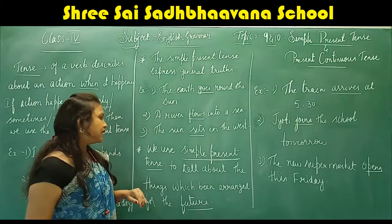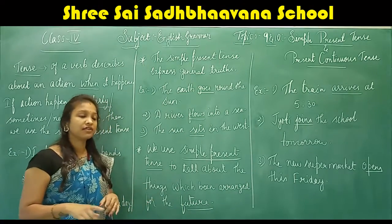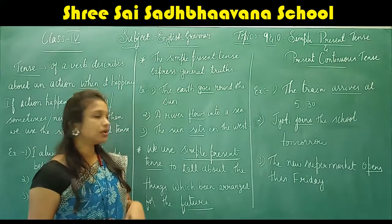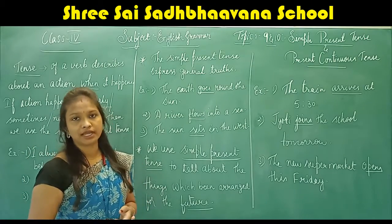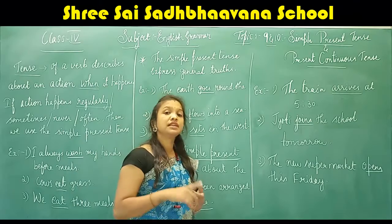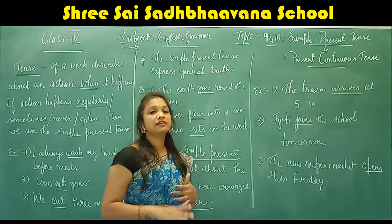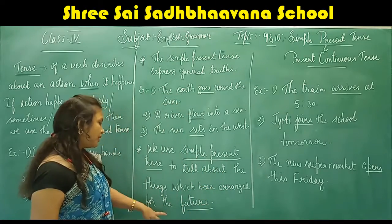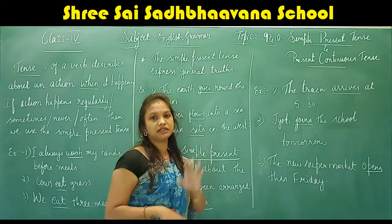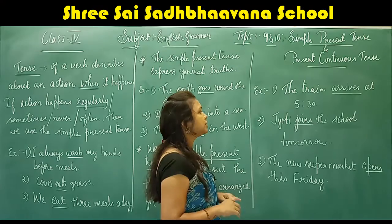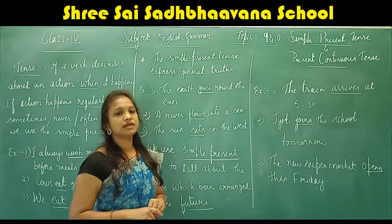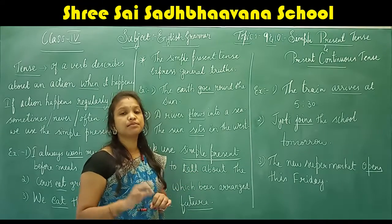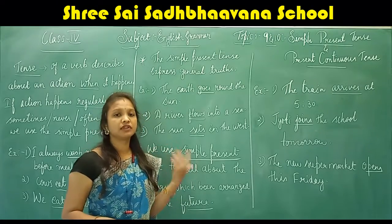We also use simple present tense to tell about things which have been arranged for the future. For example: 'The train arrives at 5:30.' Here the verb 'arrives' is in simple present tense and is used for showing a future time. Next: 'Jyoti joins the school tomorrow.' The verb 'joins' is in simple present tense and denotes a future arrangement.